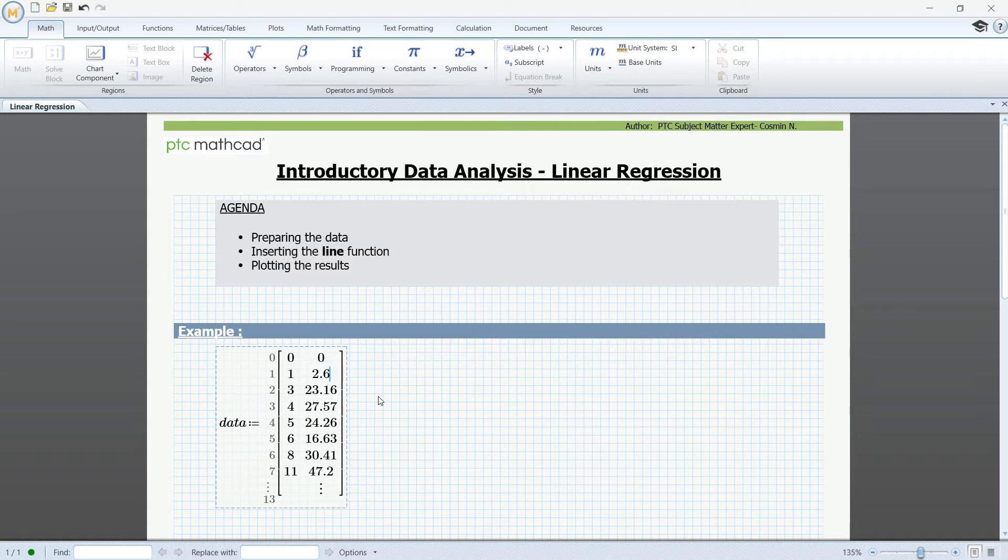So the first thing that we need to do is to separate them into two vectors. I'm going to define the vector for x values, and this will be data column 0. And next to it, we're going to have the vector for y values. That will be data column 1. So right now, we have created our two vectors.